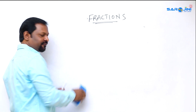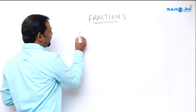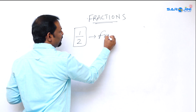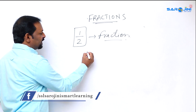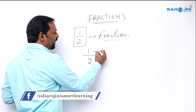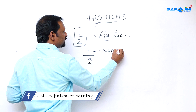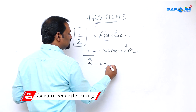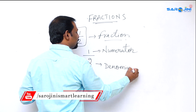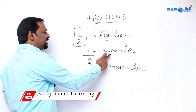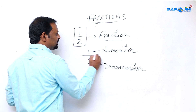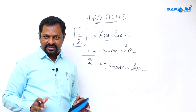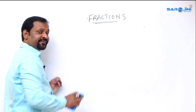Now, in one by two, the number one is called the numerator and the number two is called the denominator. The numerator and denominator are divided by a line. So a fraction consists of a numerator and a denominator.